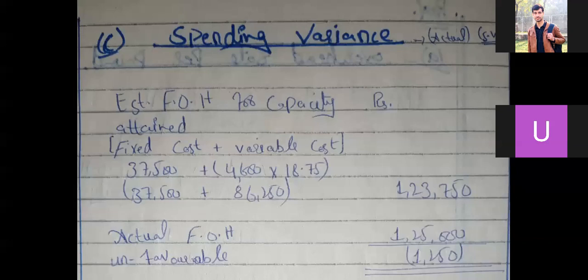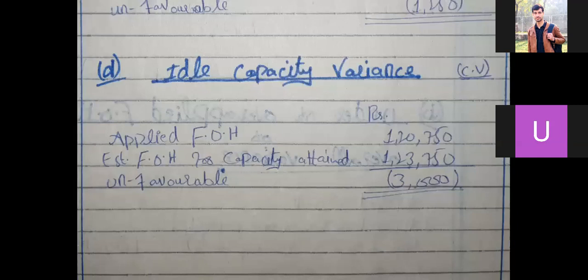For spending variance, find estimated FOH for capacity attained: fixed cost 37,500 plus variable cost — variable rate 18.75 times actual capacity 4,600 pounds equals 86,250 — giving total of Rs. 1,23,750. Actual FOH is Rs. 1,25,000, so unfavorable spending variance is Rs. 1,250. For ideal capacity variance, applied FOH of Rs. 1,28,750 minus estimated FOH for capacity attained of Rs. 1,23,750 gives unfavorable balance of Rs. 3,000.